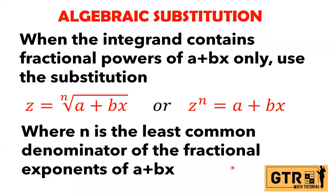Algebraic substitution is used when the integrand contains fractional powers of (a + bx) only. Our integrand contains powers of (a + bx), so we use the substitution z = nth root of (a + bx), or equivalently z^n = a + bx, where n is the least common denominator of the fractional exponents of (a + bx).